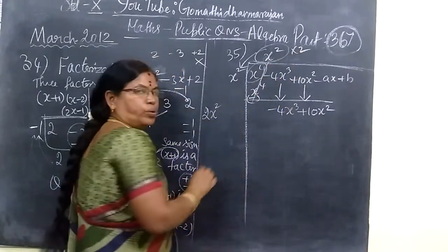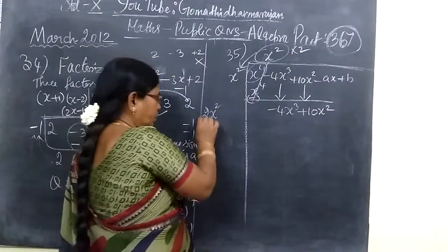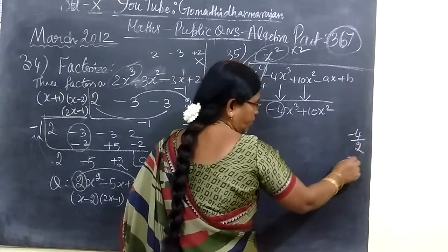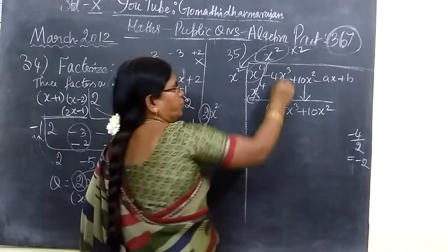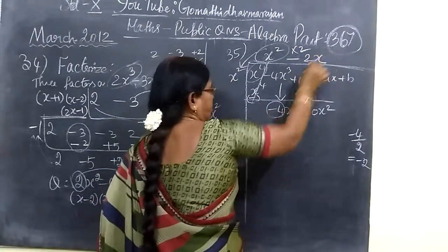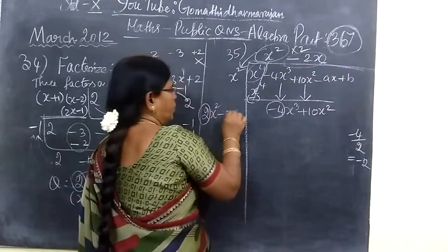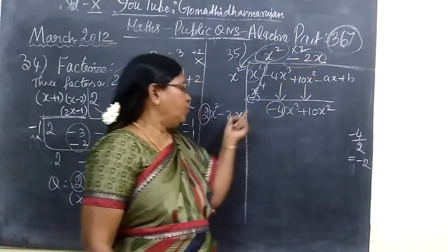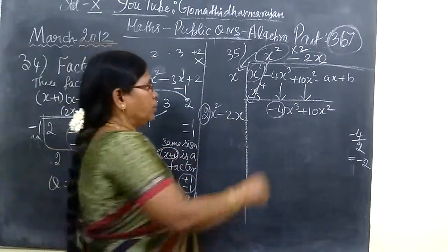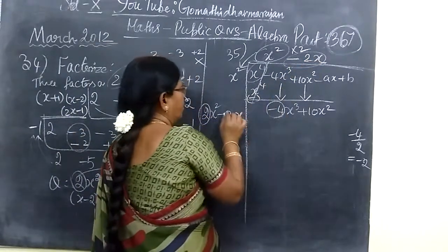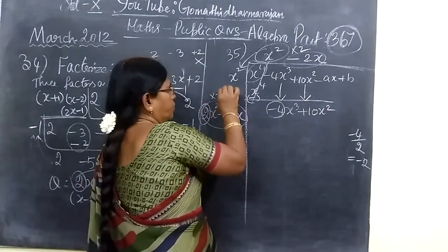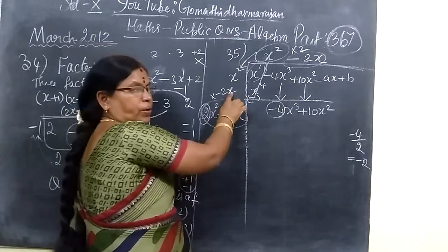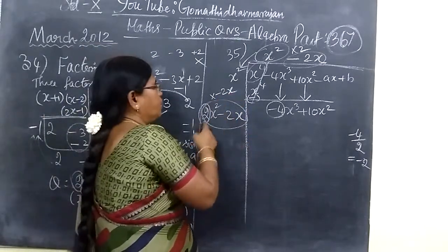In the next one, divide from the next one, the answer is direct. That is now minus 2. The same thing you are writing here. Then this is minus 2x². Complete the term, multiply it.